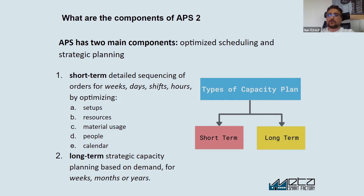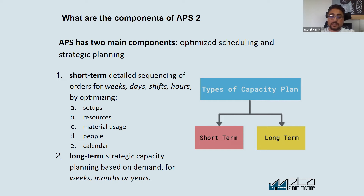The second question: what are the main components of advanced planning and scheduling? We can split it into two parts — one is short-term planning, another one is long-term planning. Short-term planning is mostly shift-based or daily planning, so you can make a plan for the short period.